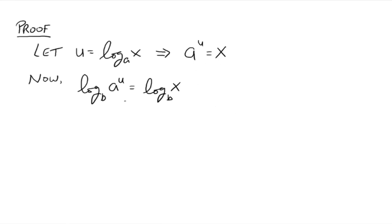All right, so if this is true, then this line has to be true because you've got the same base down here. And then we've got that power rule property that says, okay, you can bring the U down in front. So we have U times the log base B of A equals log base B of X. Everybody with me?